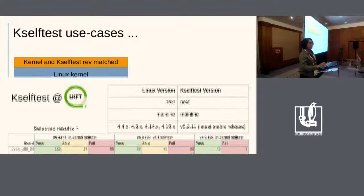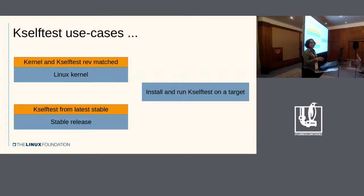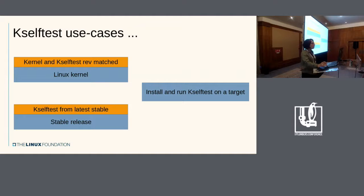There are three different use cases. Rev-matched kernel is what those numbers showed. Then we have kselftest with the latest stable — that means kselftest on Linux-next and 5.3 RCs is matched, but when it comes to stables like 5.2 — I think we're at 5.2.14 now — and 4.14, 4.9, 4.19, the latest stable kselftest is being used. So 5.2.14 will be used on all of the ones below including 5.2.14.